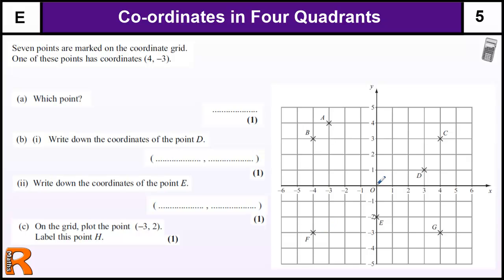We should remember that the point in the middle, labelled O, is the origin. There are several points on this grid. One of them is (4, -3) — so which one is it? The first value of the coordinate is the x value.